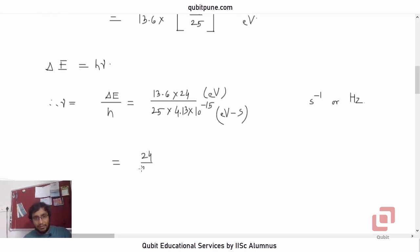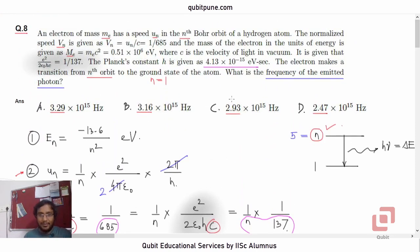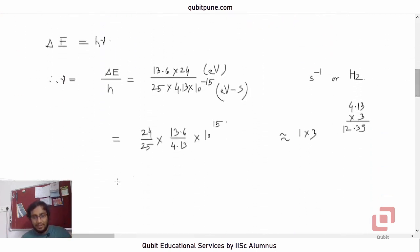So it's 24 by 25 into 13.6 upon 4.13 into 10 to the power 15. Now if you approximate this as 24 by 25 as 1 and 13.6 upon 4.13 as 3, then as I said earlier, you will not be able to decide which of the options is true, because all of them are very close to 3. So we have to either calculate it properly or use a calculator.